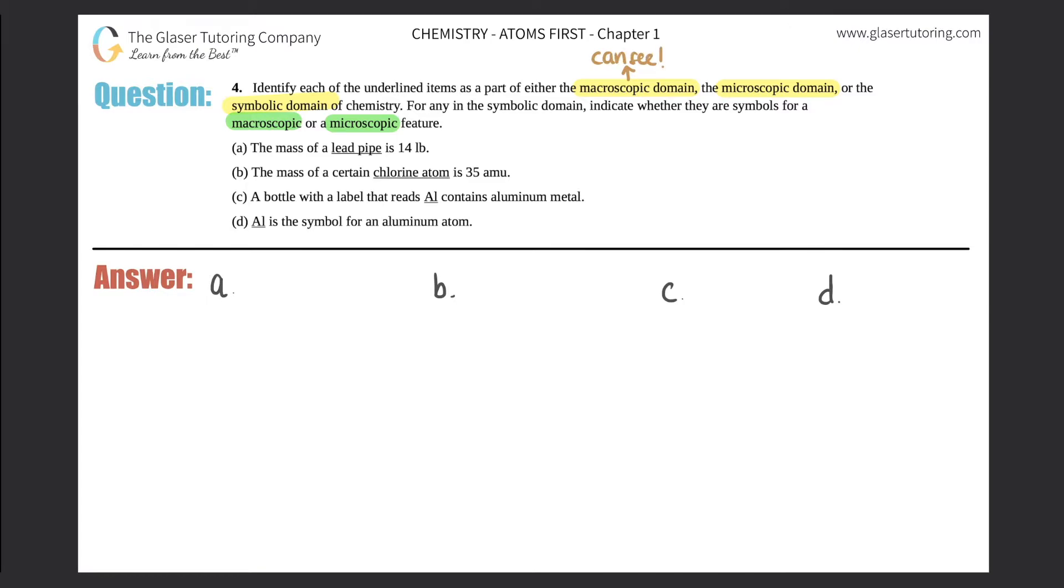Microscopic domain is, on the other hand, things that we cannot see with our eyes. So stuff that we know that's there but we cannot see. Therefore, viruses, bacteria, actual atoms—all the stuff that we know because of science, but we just can't see them. Our eyes aren't powerful enough.